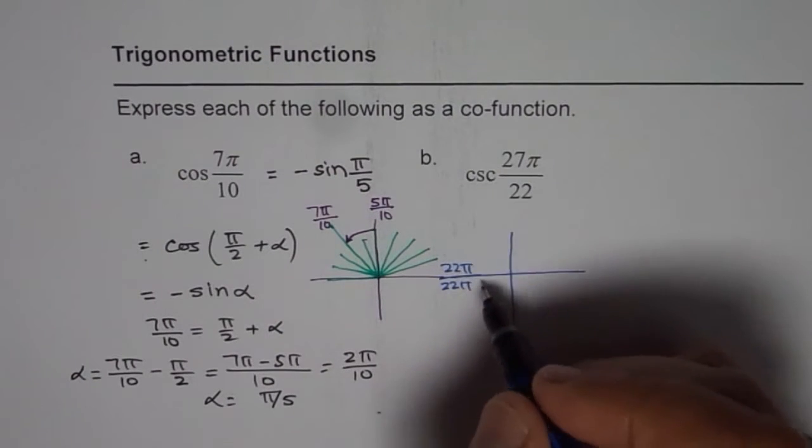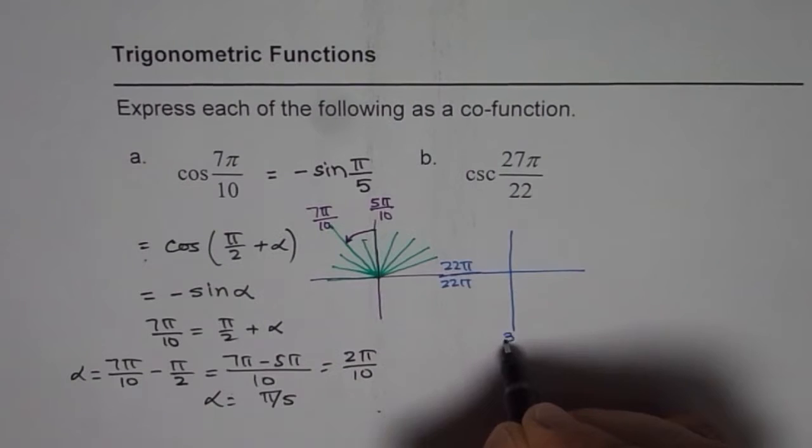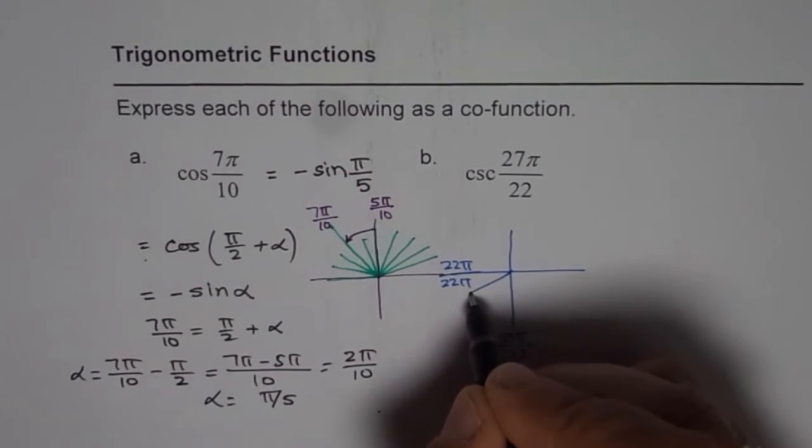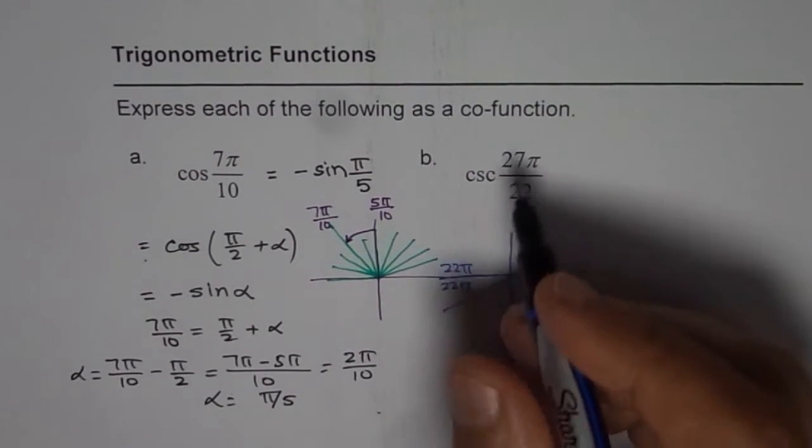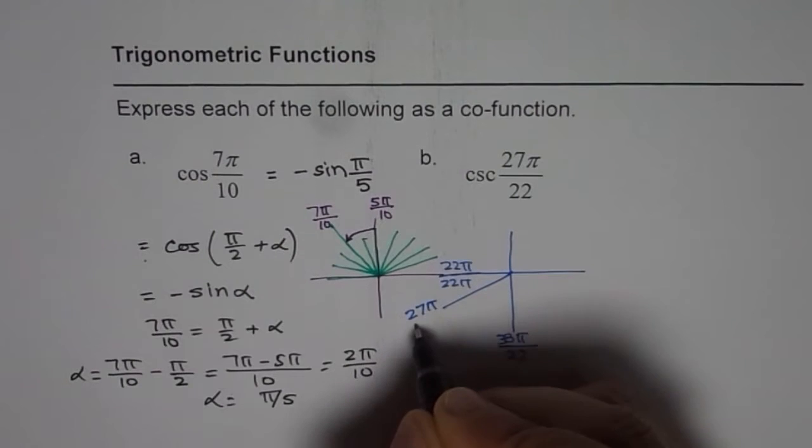So what we have here is 11, so this is 33π/22. So we are here, which is 27π/22. So how much is left? What is left over? This is what we need to find.